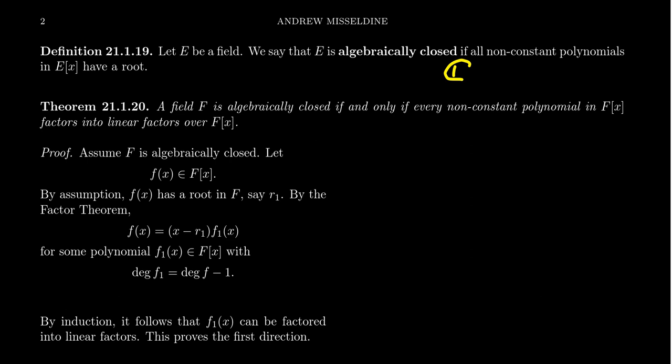Every non-constant complex polynomial has a complex root. So the fundamental theorem of algebra in our language would just be that ℂ is an algebraically closed field. That's not how it's usually stated in a college algebra class like Math 1050, but in the language of abstract algebra, the fundamental theorem of algebra says that ℂ is an algebraically closed field.